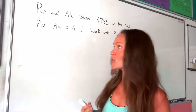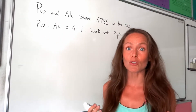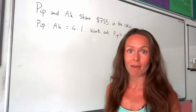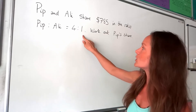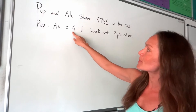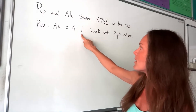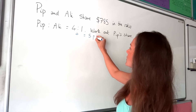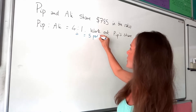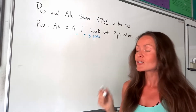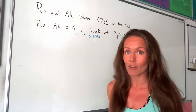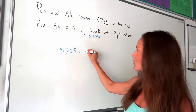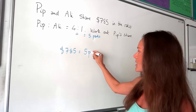In the first exam question, we're told the total amount of money, which means we need to work out the total amount of parts. Here's the ratio: Pip gets four parts and Ali gets one part. Adding those together gives the total number of parts, which is five. So that total amount of money, $785, must be equal to five parts in this question.